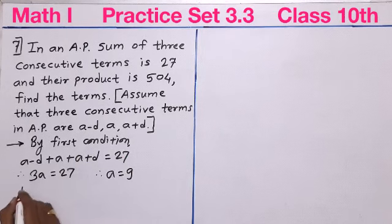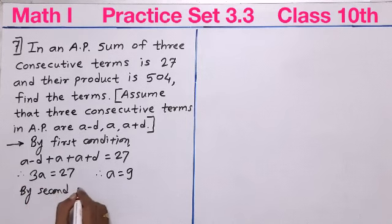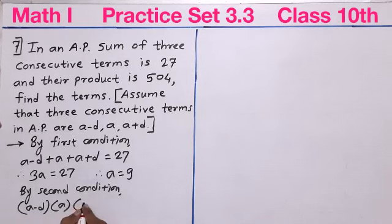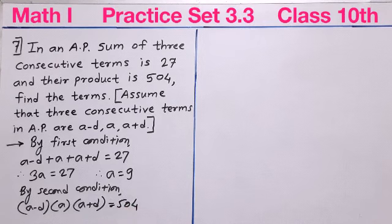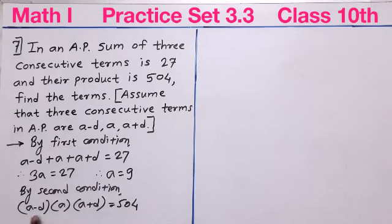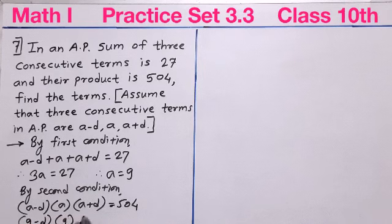By the second condition, the product of the first term (A minus D), second term (A), and third term (A plus D) equals 504. We substitute the value A = 9, giving us: (9 minus D) × 9 × (9 plus D) = 504.